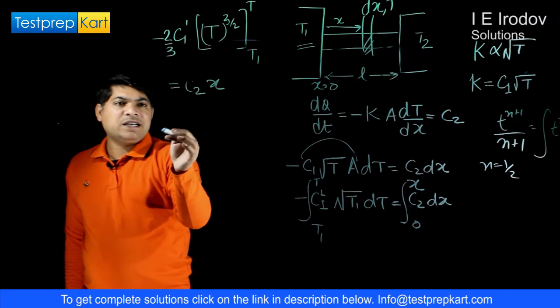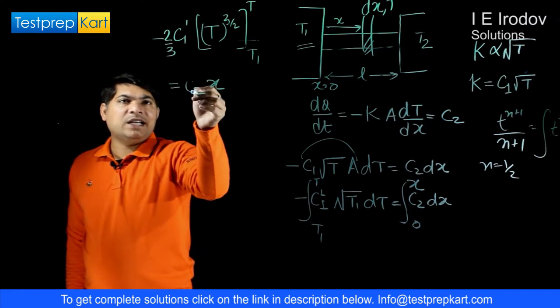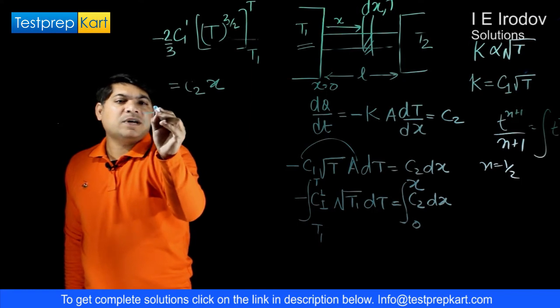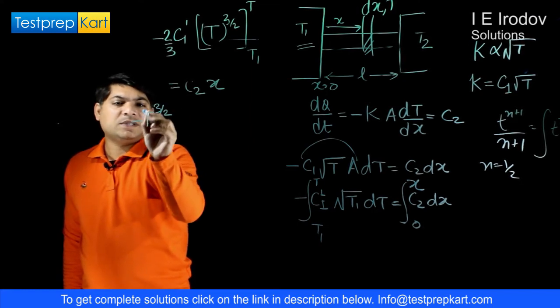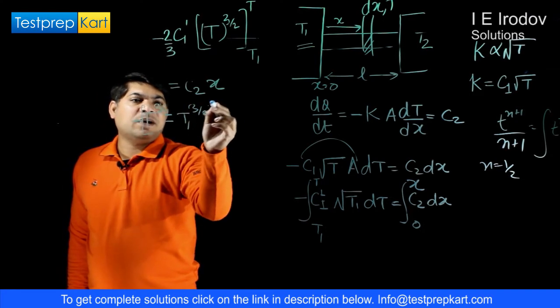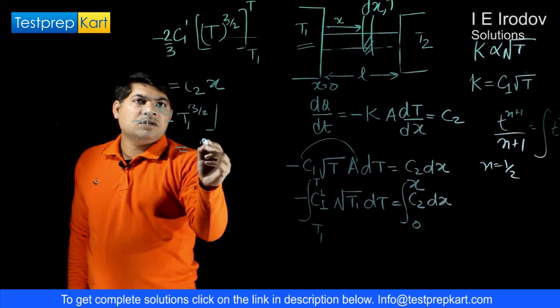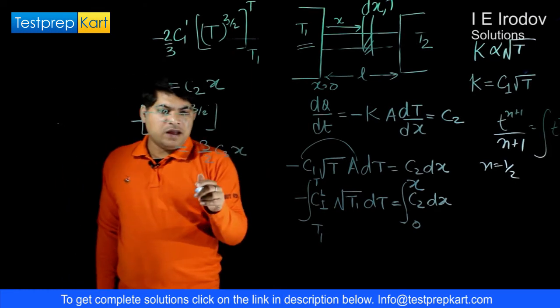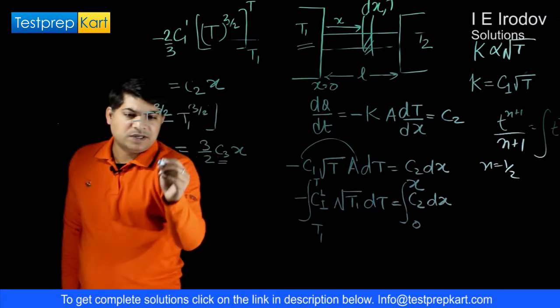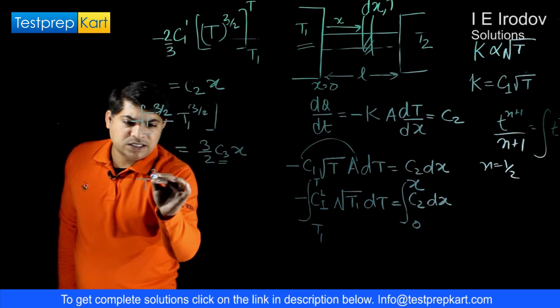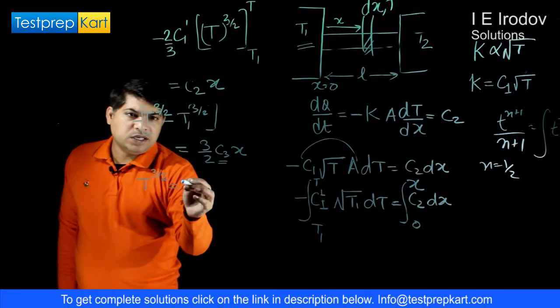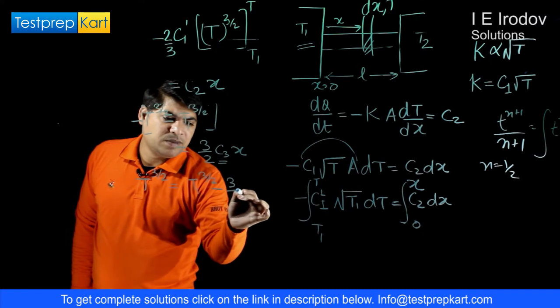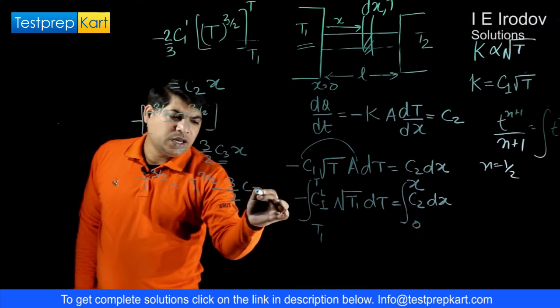From here we can write that this constant can be taken into the denominator just to avoid the complications. We can write T to power 3 by 2 with negative sign minus T1 to power 3 by 2 is equal to 3 by 2 on opposite side, any constant C3 into x. We have to eliminate this term. First let us write expression for T.